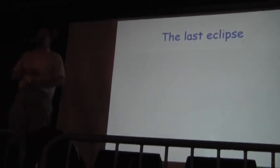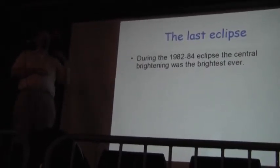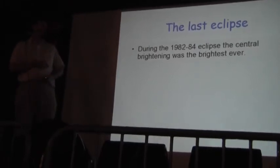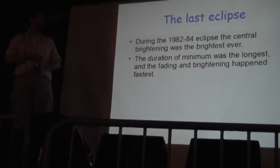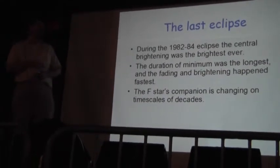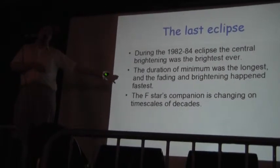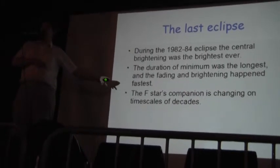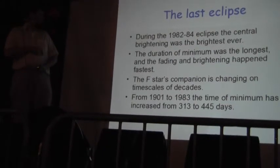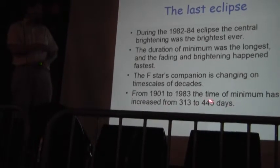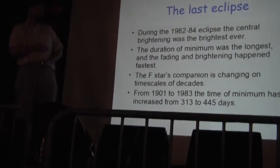Now, this is a two-year eclipse. The whole eclipse lasts two years. So, last eclipse, or the eclipse previous to the one in 2009, was 1982-84. The duration of minimum was the longest known, and there was the fading and brightening problem. And the F-star is, this indicates that the F-star, the companion star, the invisible star, is actually changing in a period of 25 to 30 years, which is astoundingly rapid in astronomical terms. And here you can see that the time of minimum has increased from 313 to 445 days over the last century.